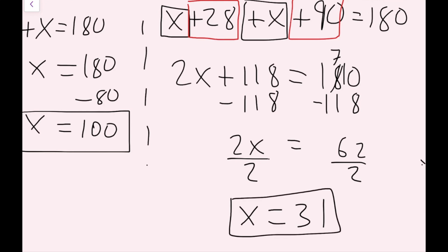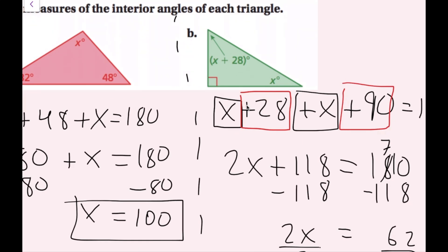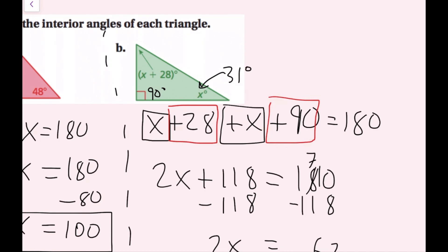That's my x value. But the question asks to find the measures of the interior angles. The right angle is 90 degrees. This angle is x, so that's 31 degrees. Then I plug 31 in for x in the expression x plus 28: 31 plus 28 gives me 59. So this angle is 59 degrees. The three interior angles are 90, 31, and 59 degrees.